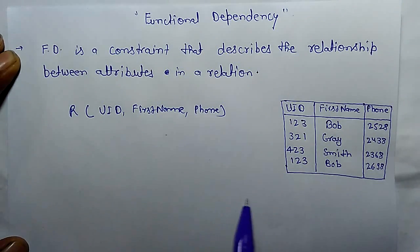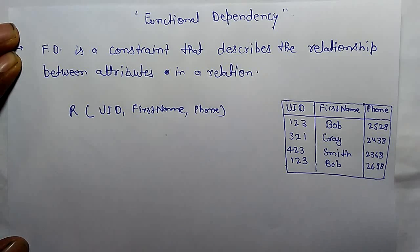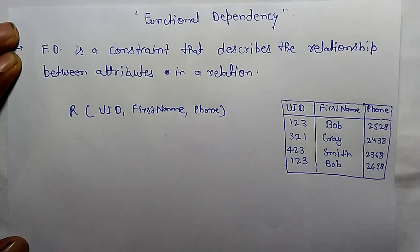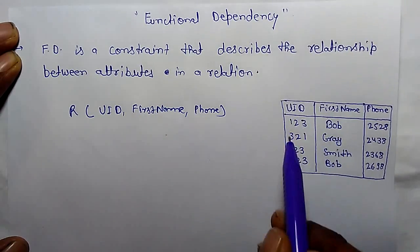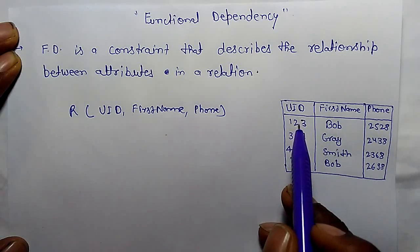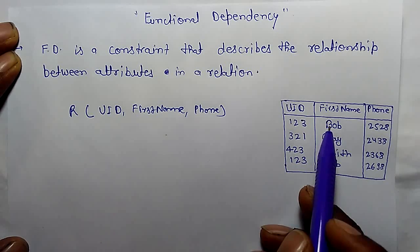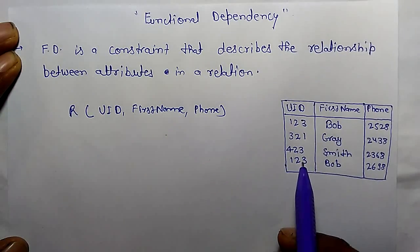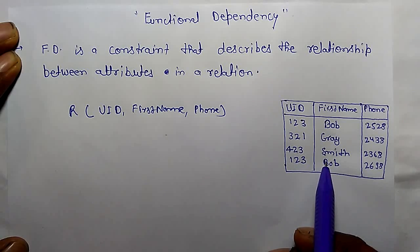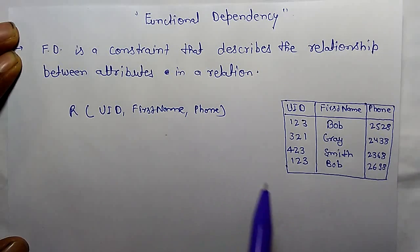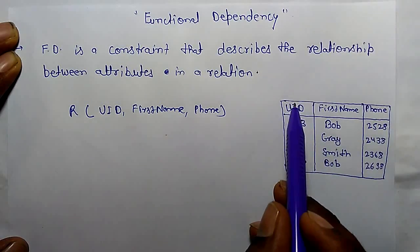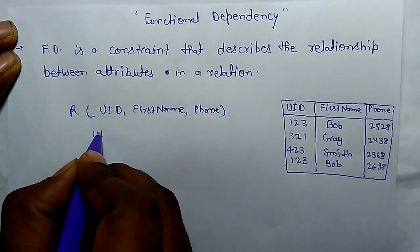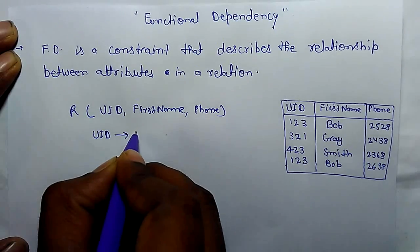In this relation, we have to find where one attribute is uniquely dependent on another attribute or not. For example, uid — the instances of uid attributes are 1 to 3, it determines Bob; 3 to 1, Gray; 4 to 3, Smith; 1 to 3 again, and it determines the same Bob. So it means uid uniquely determines first name. That's why uid functionally determines first name.